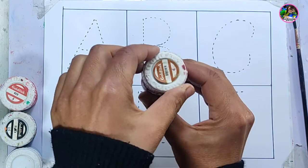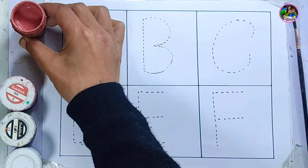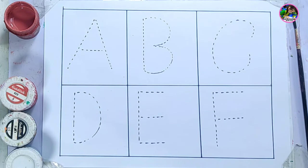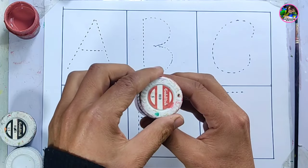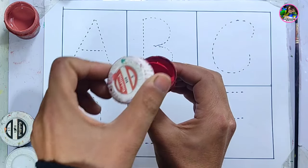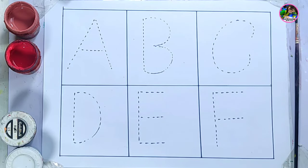This is brown color. Which color is it? Brown color. We have another color. This is red color. Which color is it? Red color.